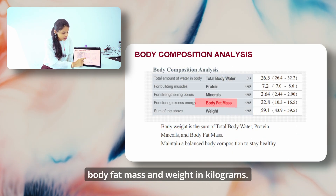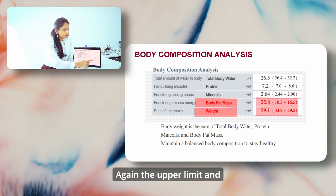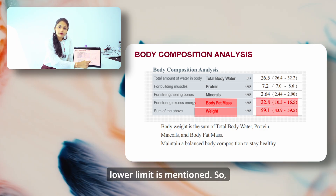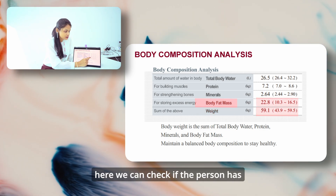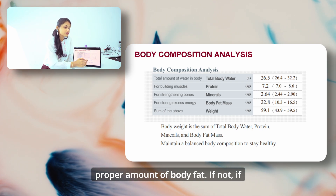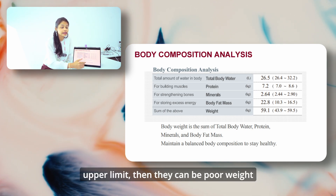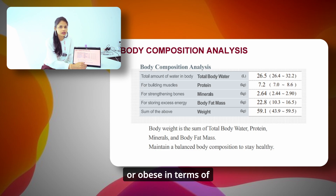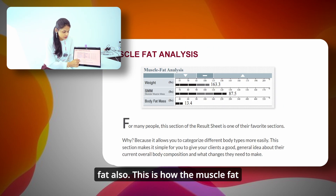Here we have body fat mass and weight in kilograms, with the upper limit and lower limit mentioned. We can check if the person has a proper amount of body fat. If they are exceeding the upper limit, then they can be overweight or obese — in terms of weight as well as body fat.